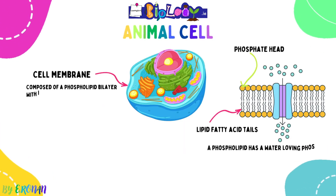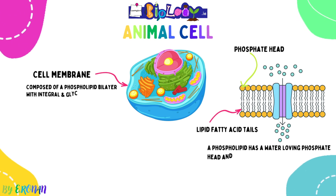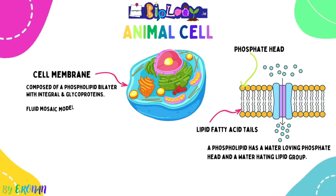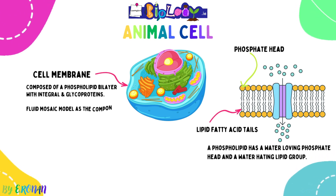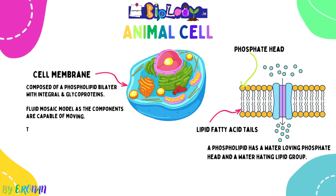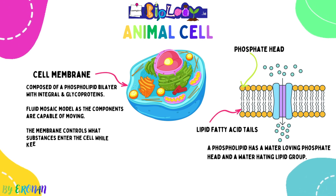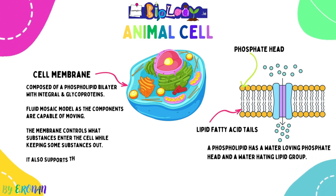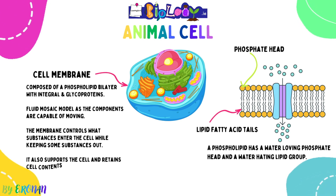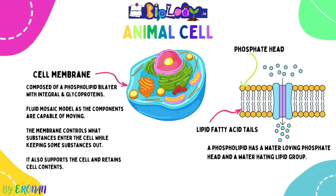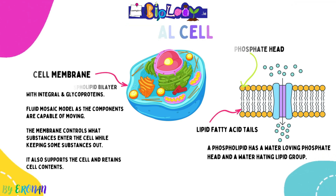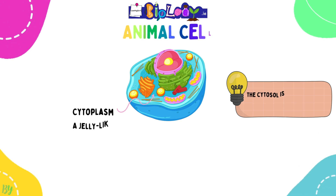The cell membrane is composed of a phospholipid bilayer with integral and glycoproteins. It is known as the fluid mosaic model, as its components are capable of moving. The membrane controls what substances enter and exit the cell — the cell membrane is selectively permeable, allowing certain substances in and keeping others out. It supports the cell and retains the cell contents. There is a diagram of the phospholipid bilayer shown here.